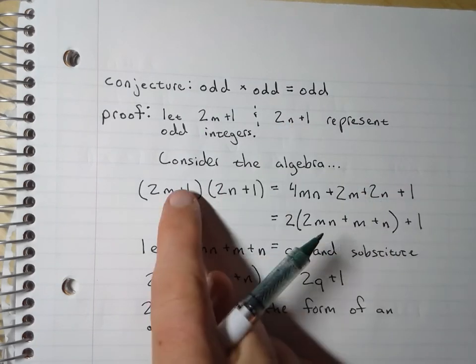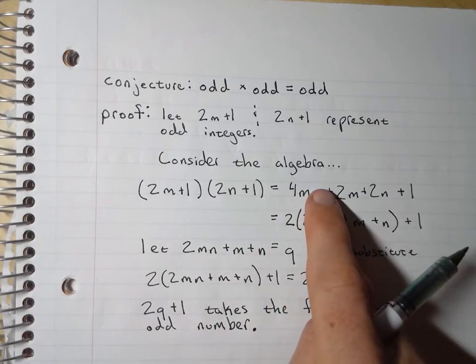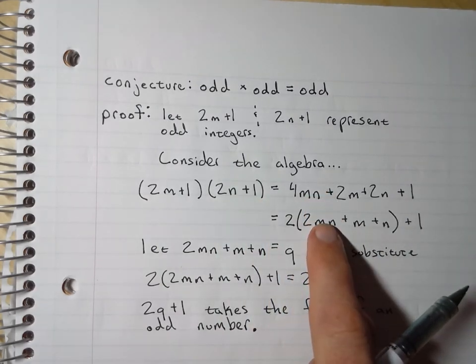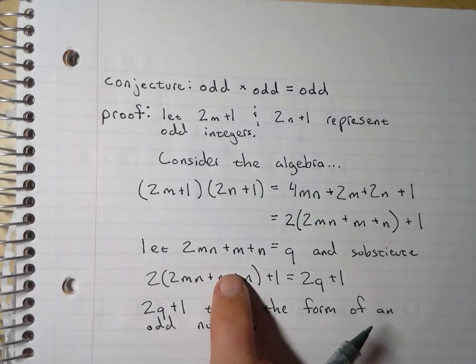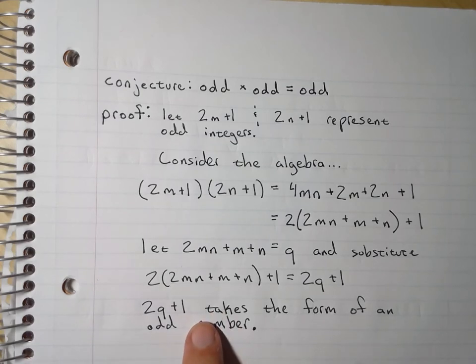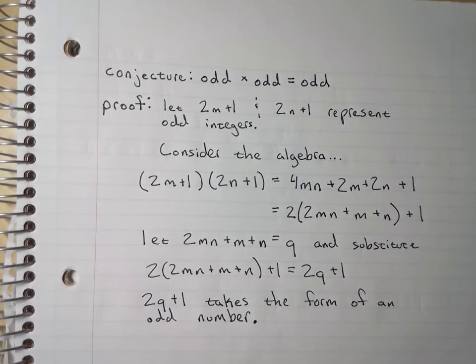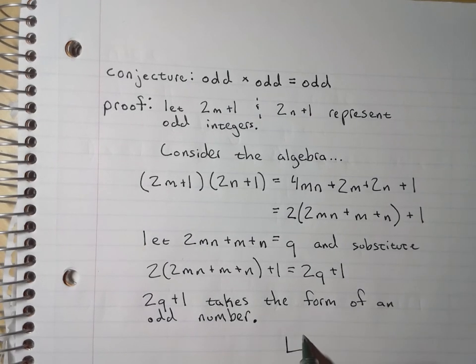Take the product of those two odd numbers, do some crafty algebra and a clever substitution, and you're able to prove, beyond the shadow of a doubt, that the conjecture odd times odd is odd.